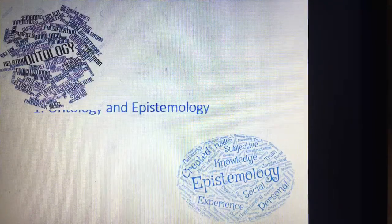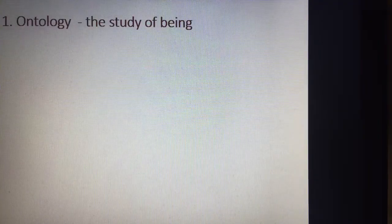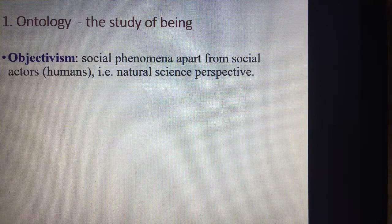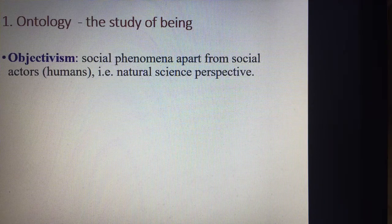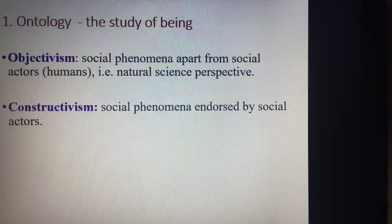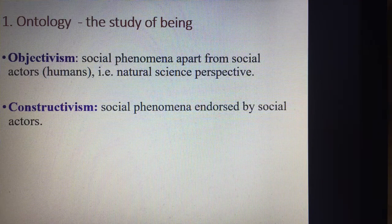The first is ontology, which is the study of being. It has three approaches. The first is objectivism, where social phenomena exist apart from social actors — human beings are not involved — and that is the natural science perspective. The second is constructivism, where social phenomena are endorsed by social actors, and that is the key difference between objectivism and constructivism.